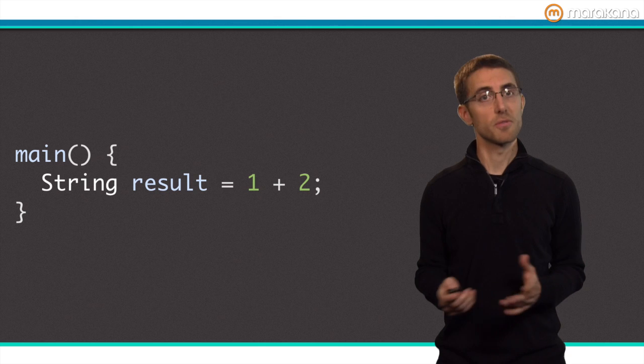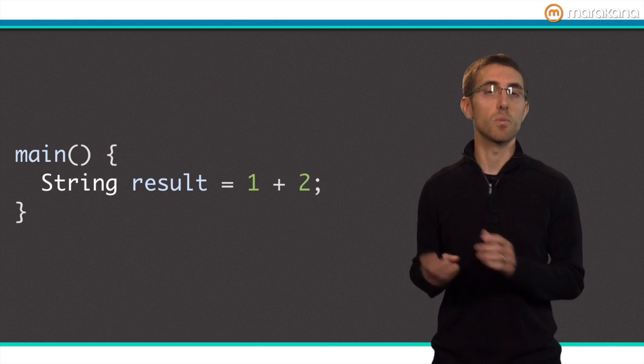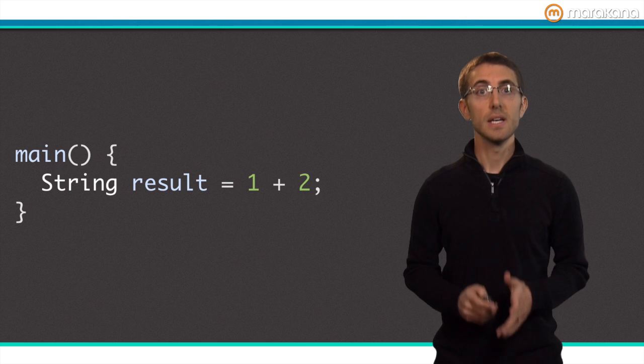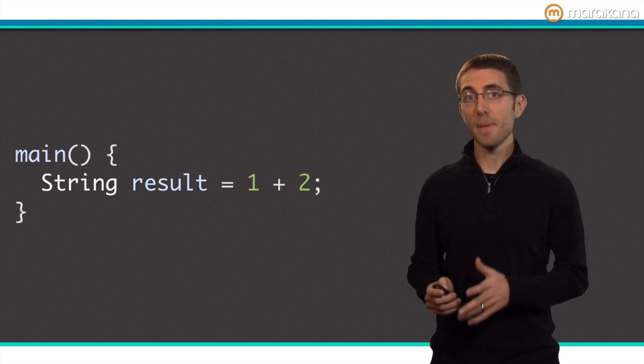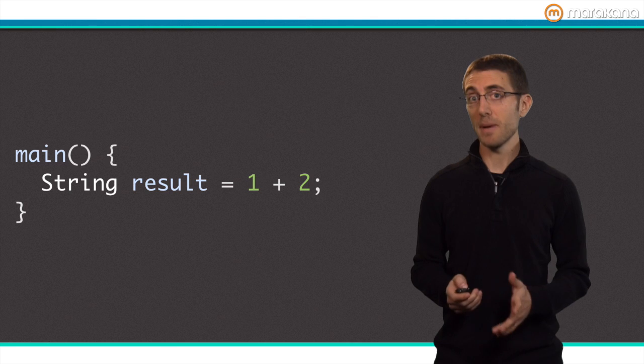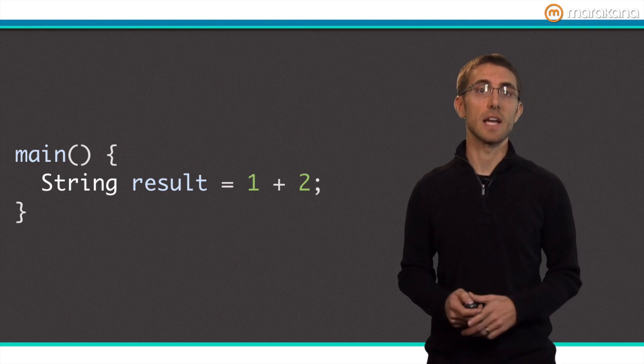Going back to our line of code that looks so very strange, it's clear that the expression 1 plus 2 evaluates to an integer and not a string. Here, the type of the variable does not match the type of the right-hand side expression. In checked mode, this mismatch is caught at runtime and surfaced as an exception.